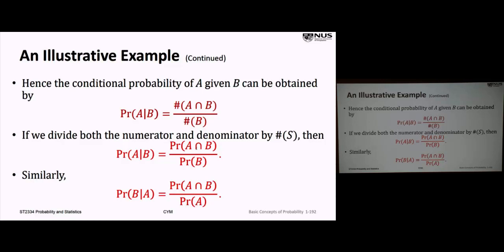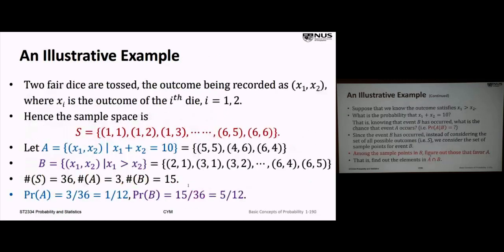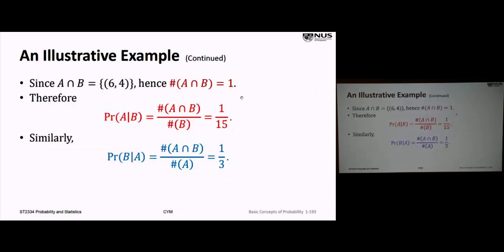The number of elements in A and B is 1; the number of elements in B is 15. So the probability of A given B is 1 over 15. The probability of B given A is the number of elements in A and B over the number of elements in A — that's 1 over 3. The definition of conditional probability: given two events A and B, the probability of B given A is the probability of A and B divided by the probability of A, provided the probability of A is greater than zero.